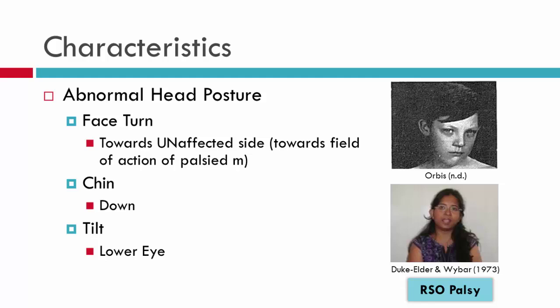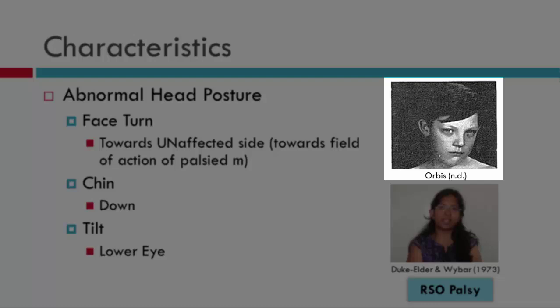With the abnormal head posture, the patient will be attempting to move their eyes into a position where they have binocular single vision. Theoretically this will be in the position directly opposite to the field of action of the palsied muscle. The right superior oblique works in laevo-depression, so the patient will want their eyes in dextro-elevation. This means a face turned towards the unaffected side, chin down, and tilt to the lower eye. Looking at the young boy shown, we can see he has adopted all three components: turning to the left, chin down, and tilting to the lower eye — which for a right superior oblique means tilting to the left.